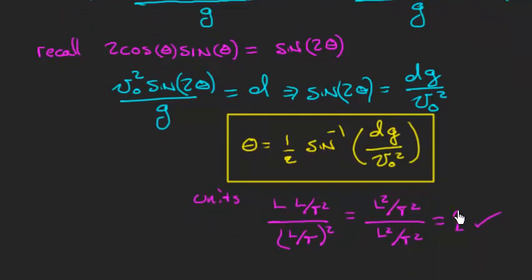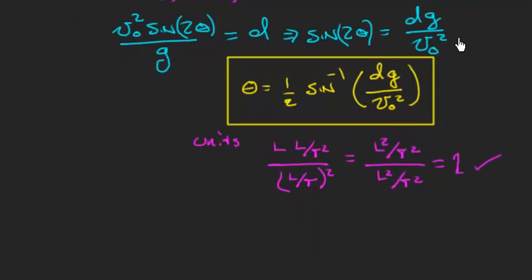That final answer was an arc sine of some quantity here. We checked the units, the units looked good, which gave us some confidence that we had a good answer. What we're going to do in this video is examine this answer a little more closely and see if we can make sense of it.